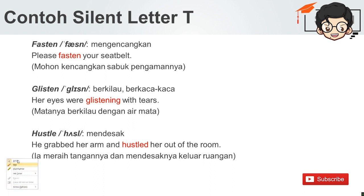Kemudian selanjutnya, menarik, ada kata 'fasten' — T jatuh setelah huruf S menjadi satu silabel, maka T-nya tidak usah dibaca. Mengencangkan. Please fasten your seatbelt. Mohon kencangkan sabuk pengamannya. Contoh lain, T setelah huruf S: 'glisten' — berkilau atau berkaca-kaca. Her eyes were glistening with tears. Matanya berkilau dengan air mata.